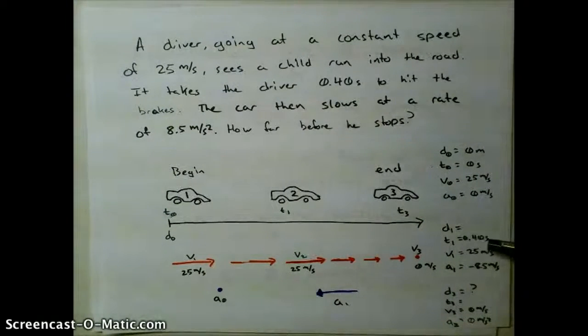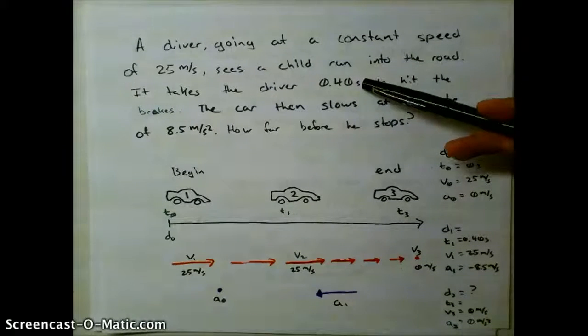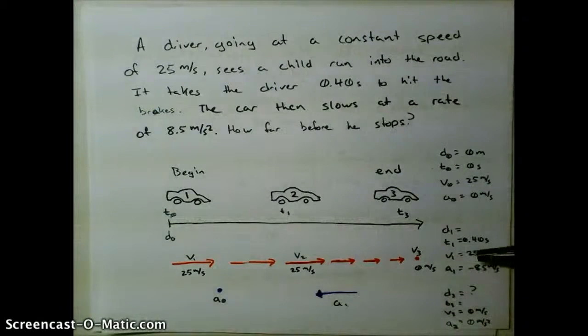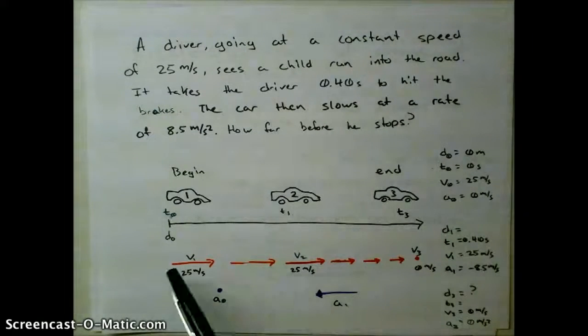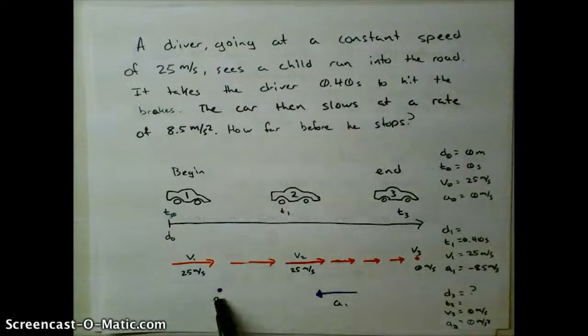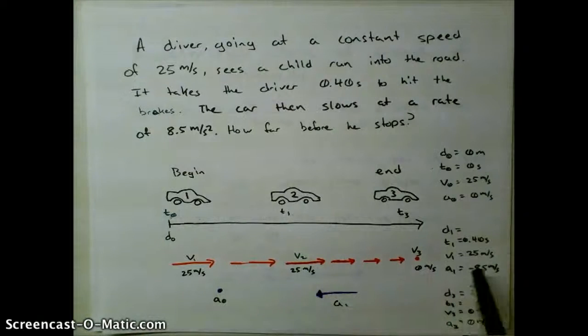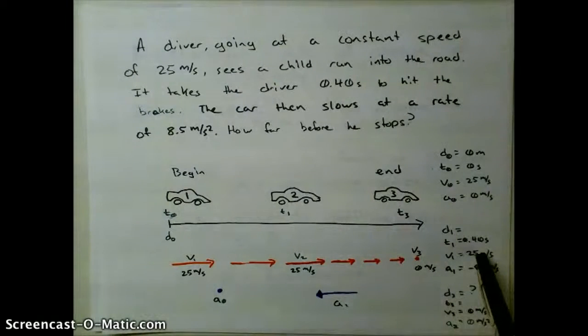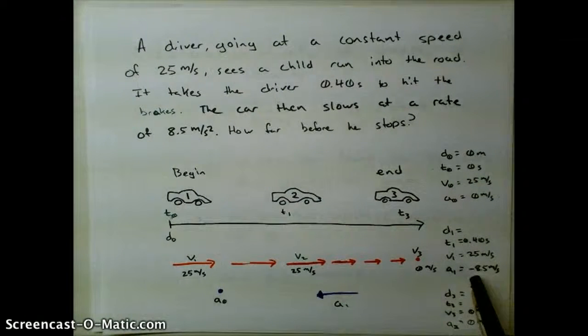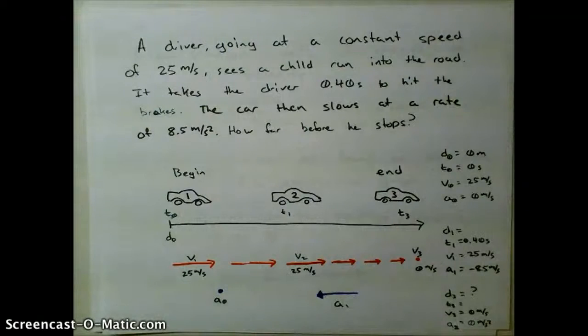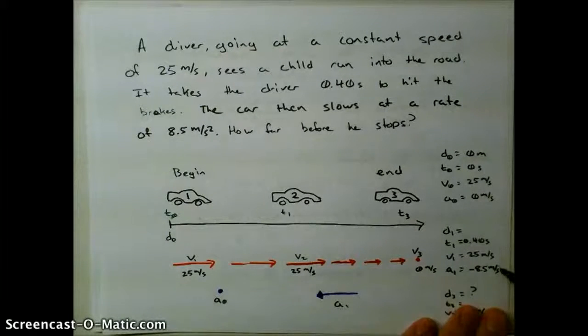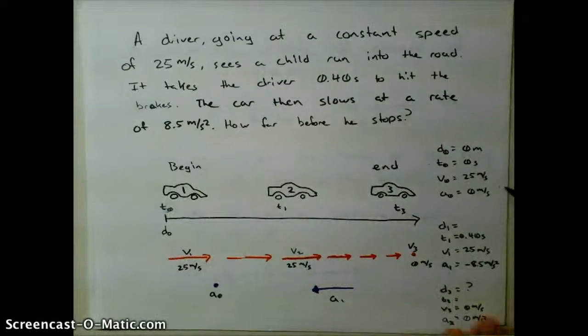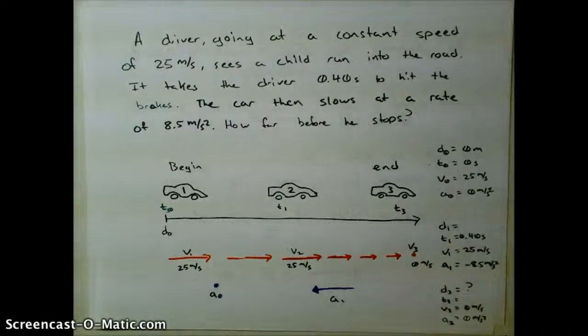We know that the time is 0.40 seconds because I was told how long until we hit the brakes. Our velocity is still 25 meters per second because he hasn't applied the brakes. Nothing has changed between here and here. There's been no acceleration. But at this time, we started out going 25, now we're going to start to decelerate at 8.5 meters per second squared. So we're going to start to decelerate now.